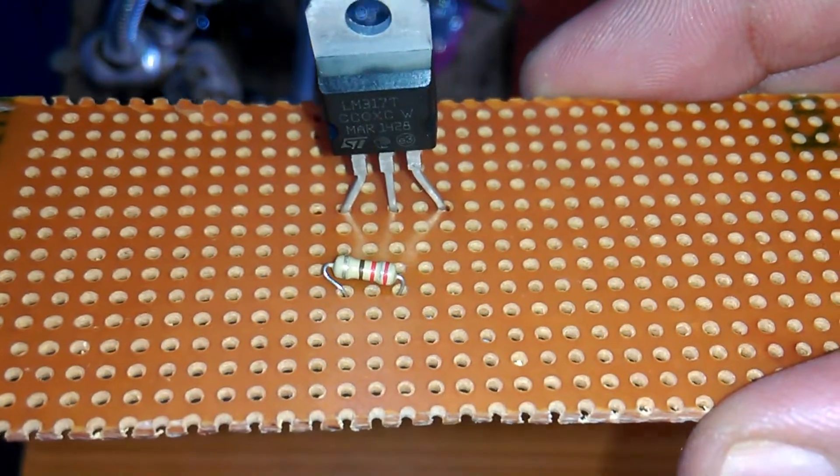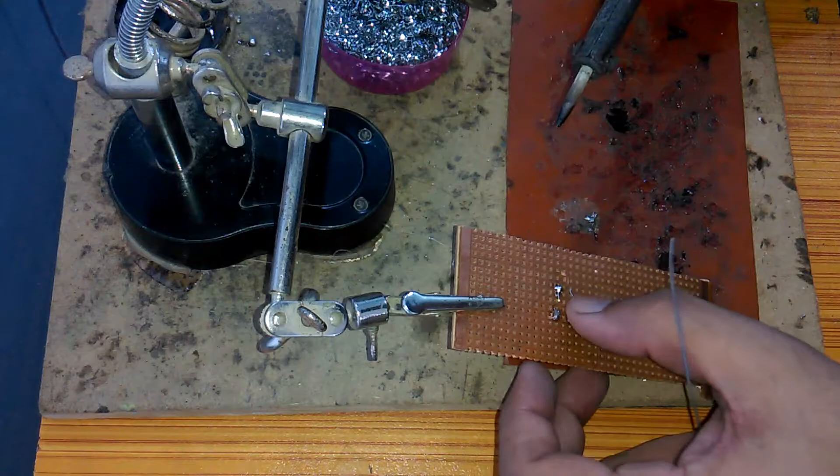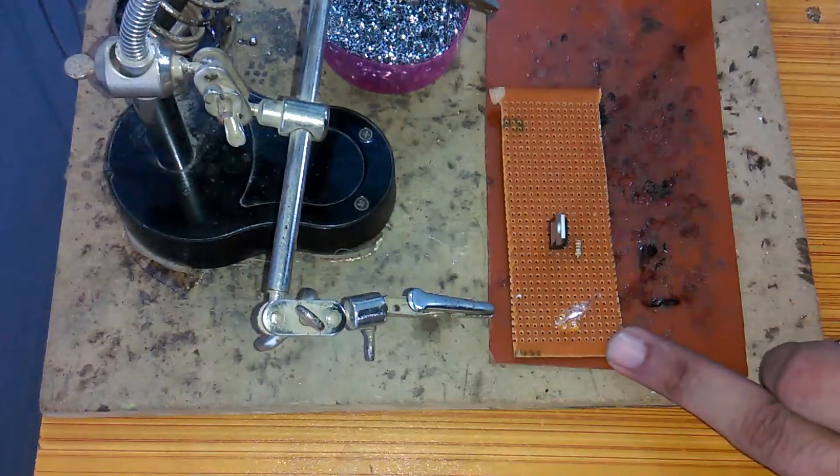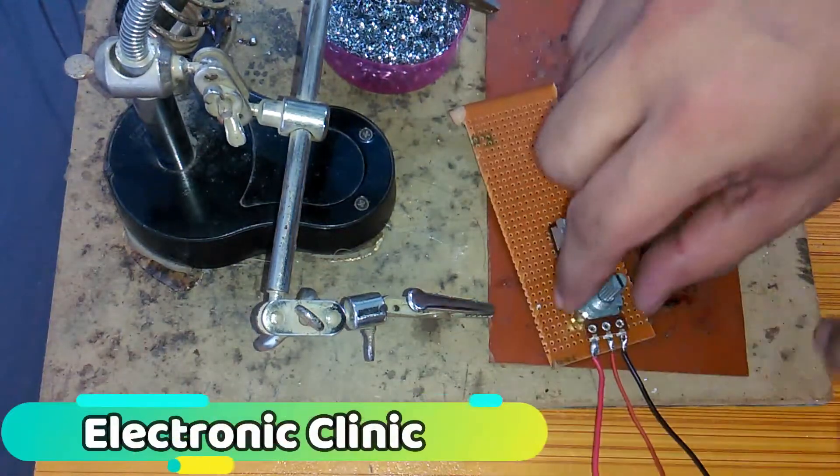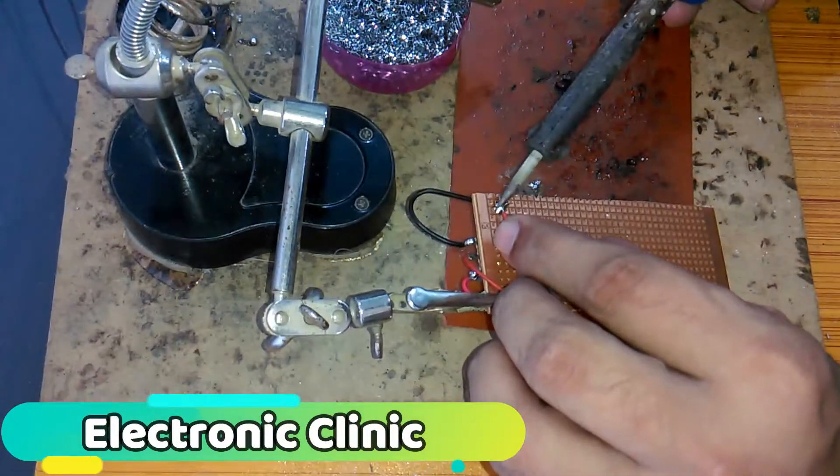Then we connect a 214 ohm resistor between the adjust and Vout—this is R1. Then I use a silicon gun to fix the potentiometer. Connect one wire with the adjust pin of the LM317, and the remaining two wires are connected together which later will be connected with the ground.